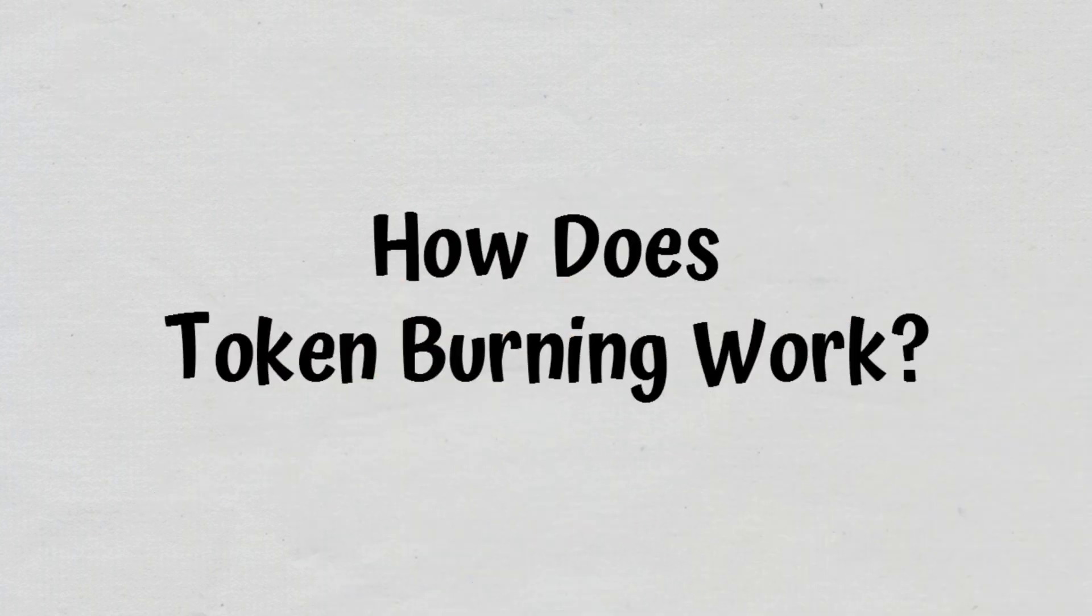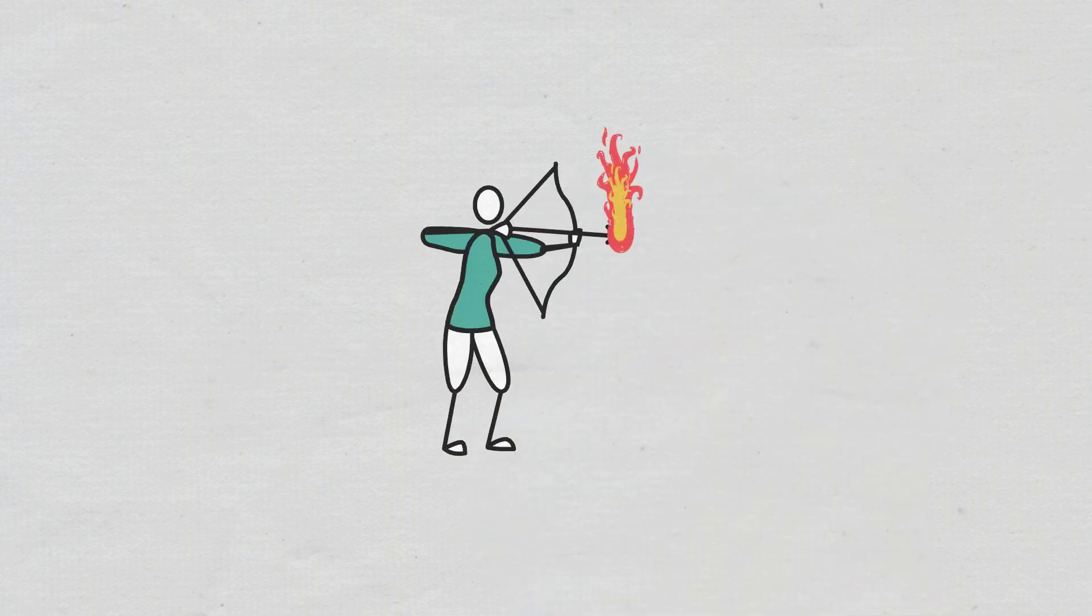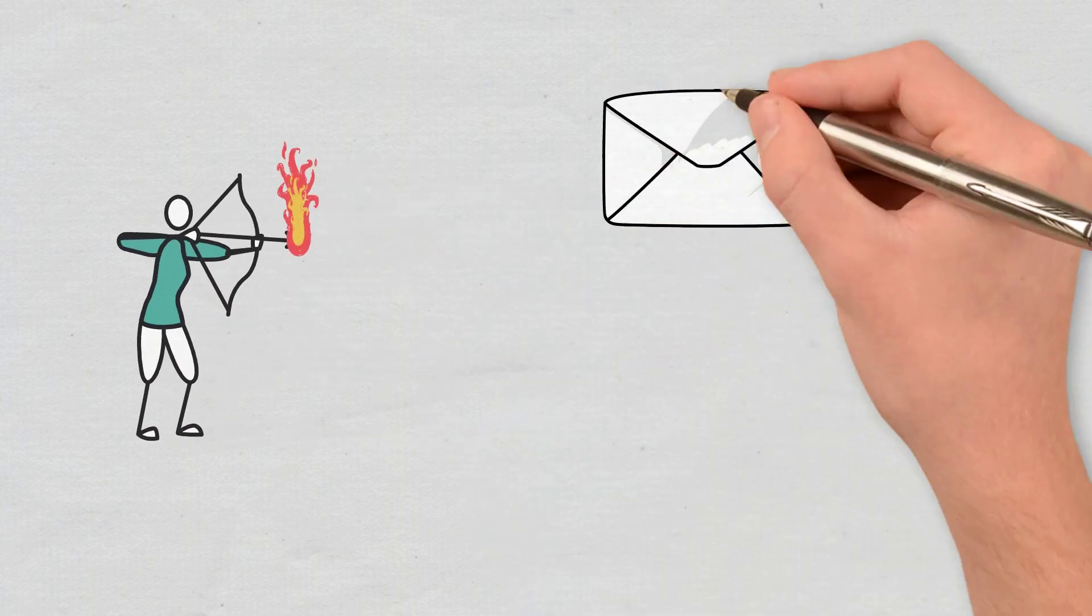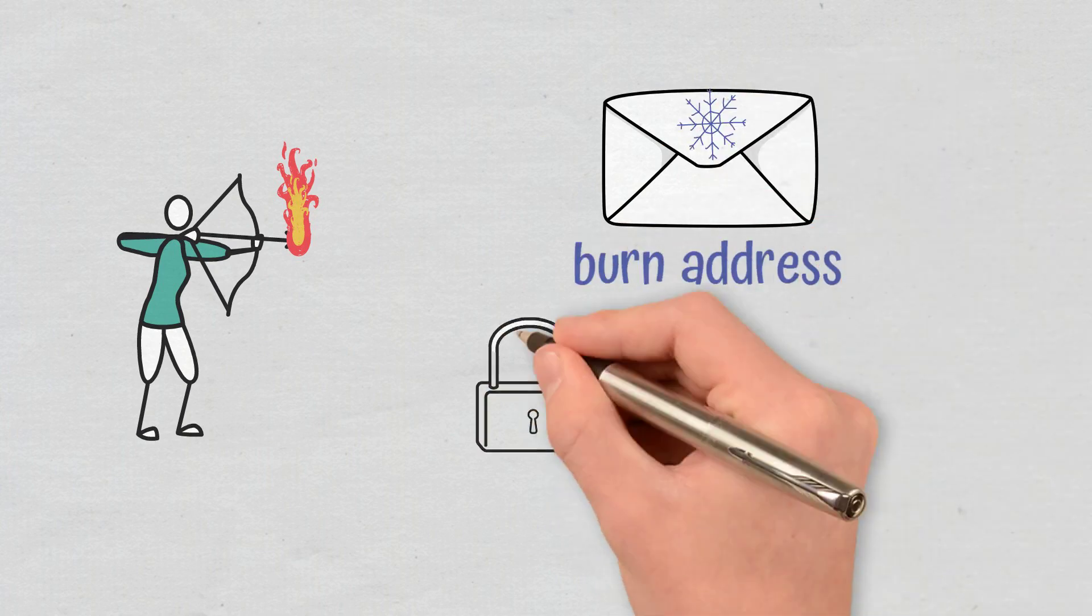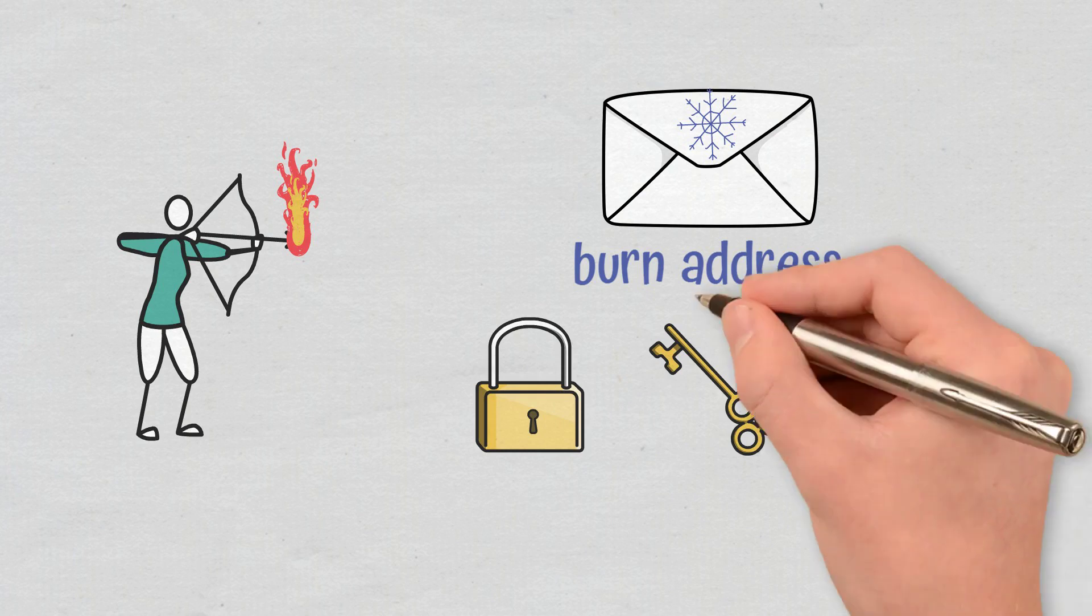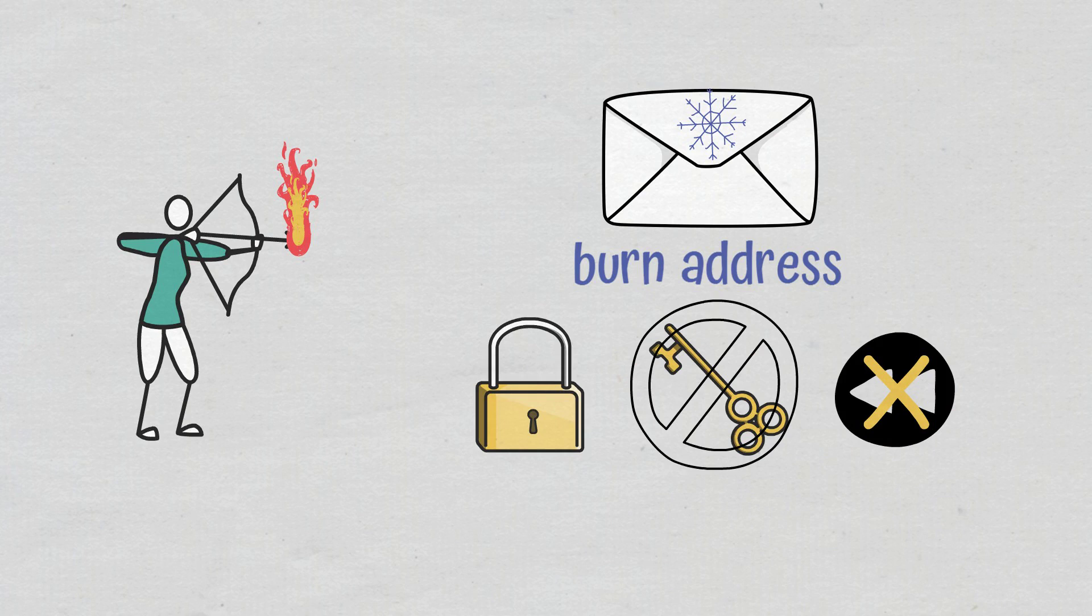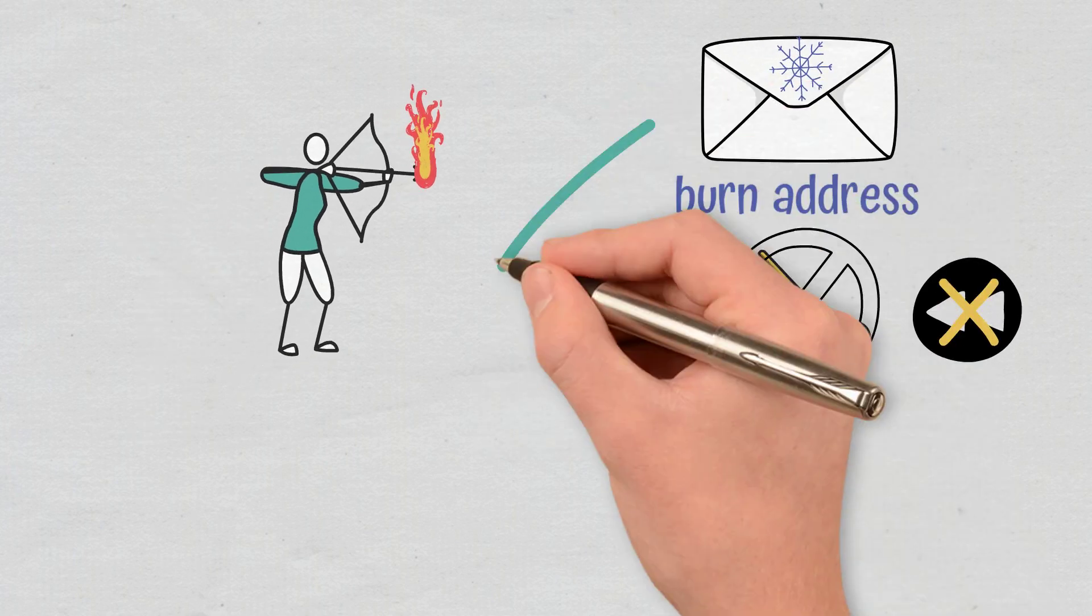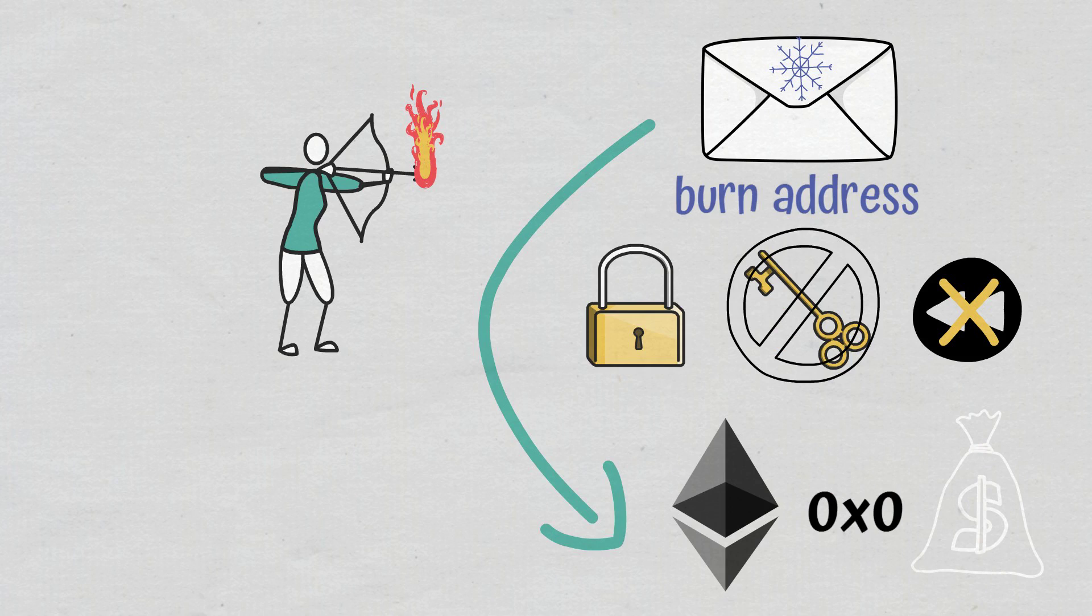How does token burning work? Tokens are burned in various ways. Sending tokens to a frozen address, also known as burn address. Nobody has a private key for this address. Once the tokens are sent, the transaction cannot be reversed and they cannot be withdrawn. An example of a common burn address is Ethereum 0x0, which contains more than 900 million worth of ERC20 tokens.